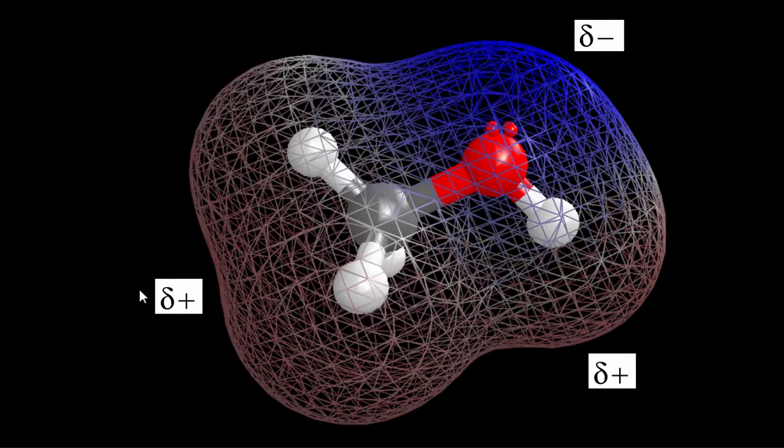Because of this negative and positive, we have a dipole, and we have poles. And if we have poles, we have a polar molecule.